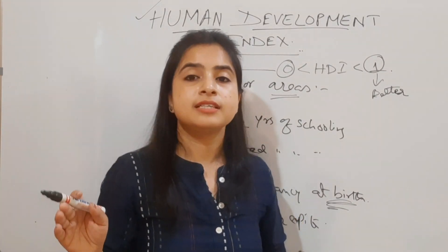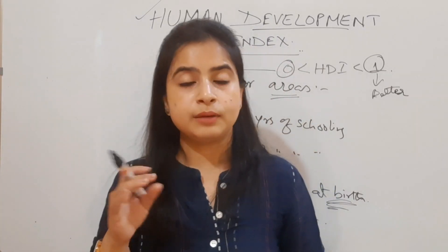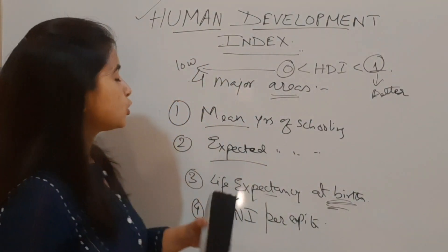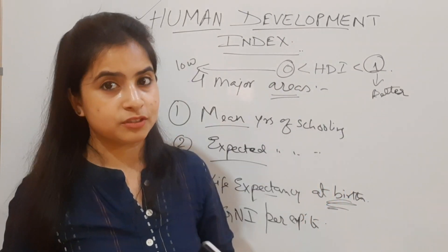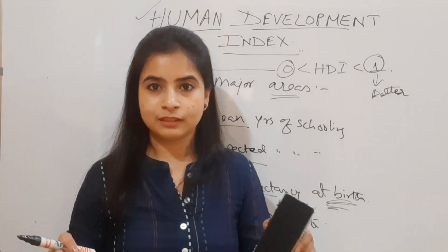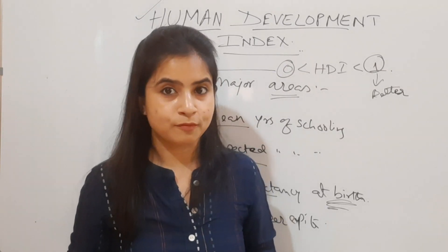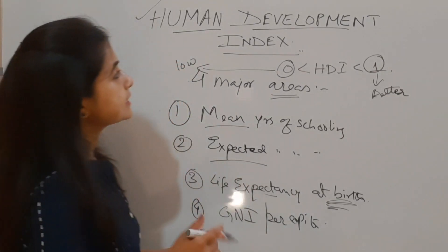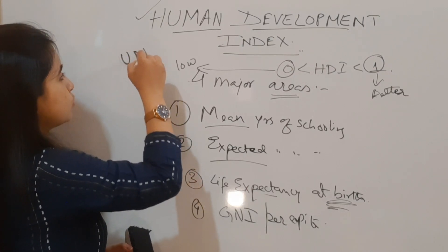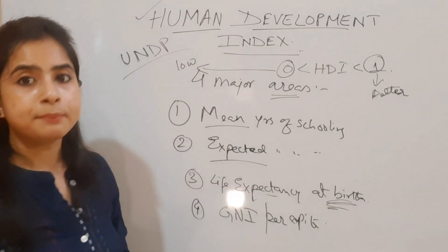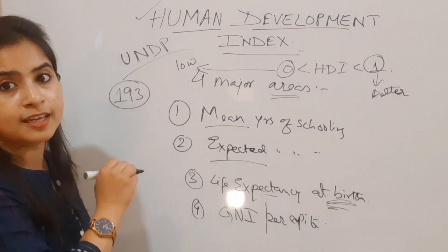Stay till the end because I'm going to talk about the ranks of our country and some important countries as well. For competitive exams, you really need to know that this HDI is compiled by the United Nations Development Programme (UNDP) for 193 countries in the world.